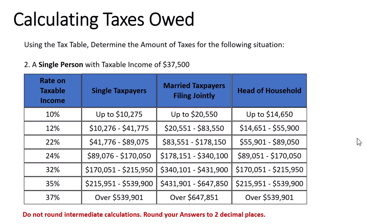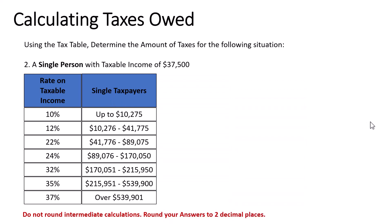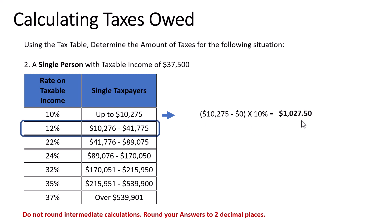The next problem involves a single person with taxable income of $37,500. We'll do the same thing — only pay attention to the part of the tax table relevant to the single taxpayer filing status and get rid of the other two columns. The steps are very similar for all these problems: first identify our marginal tax rate. $37,500 falls in the 12% tax bracket, so let's highlight that row. We'll take $10,275, subtract zero, multiply by 10%, and get $1,027.50.